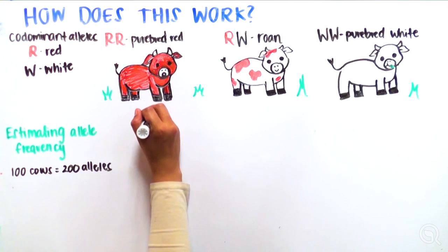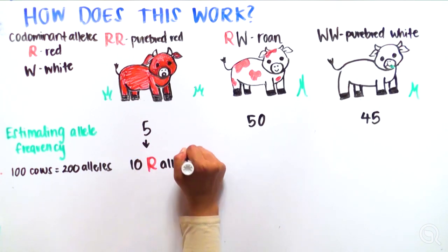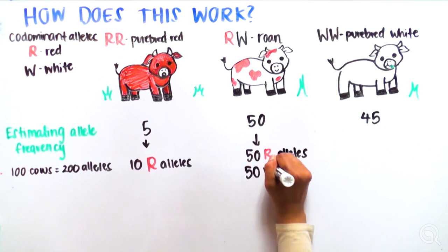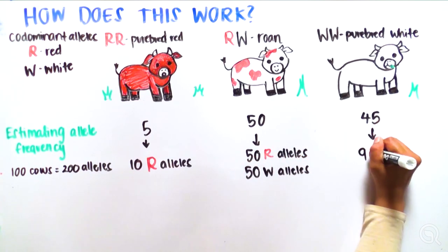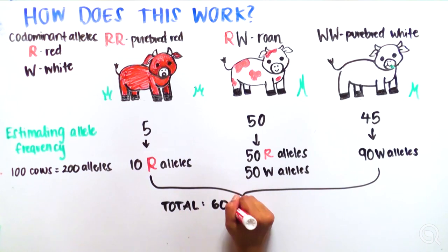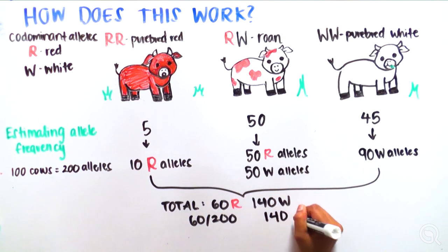Within this population, we observe 5 RR, or red cows, 10 R alleles, 50 RW, or roan cows, 50 R alleles plus 50 W alleles, and 45 WW white cows, for 90 W alleles. This gives us a total of 60 R alleles and 140 W alleles.